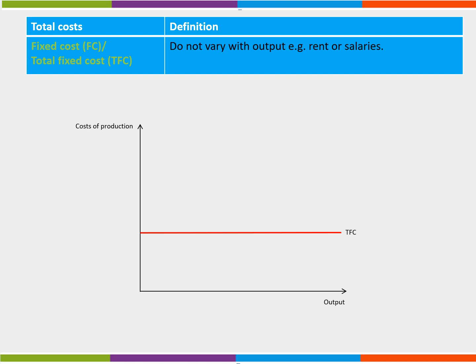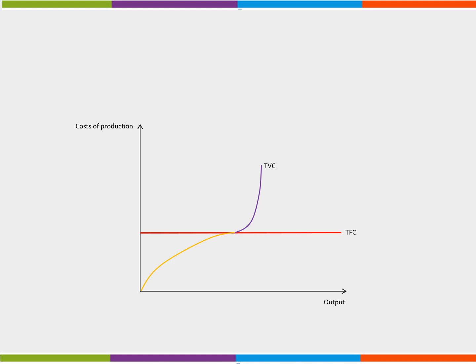Next we can add the total variable cost curve. These do vary with output, such as raw materials. The variable cost curve slopes upwards and to the right, bending outwards and then inwards.